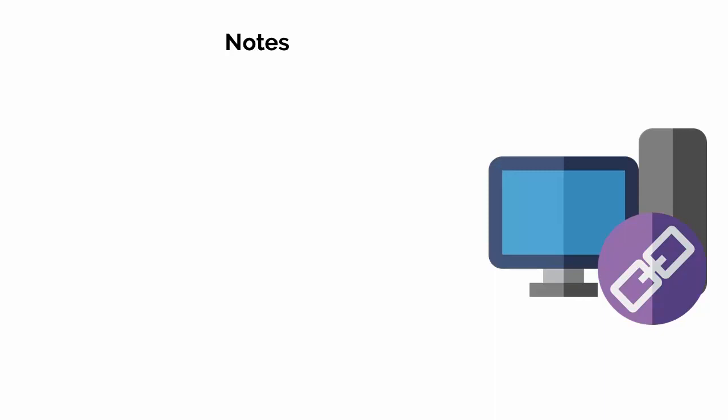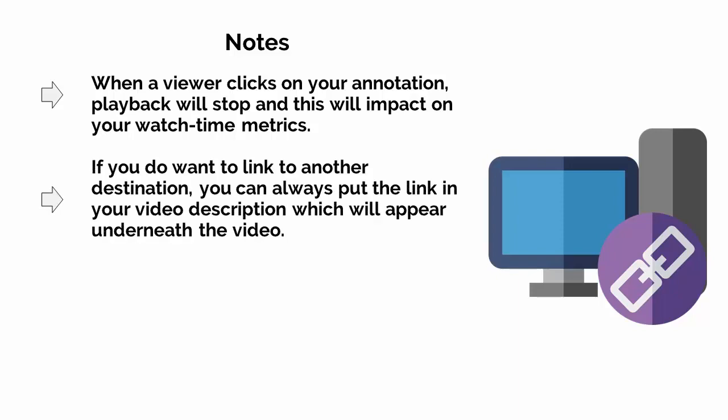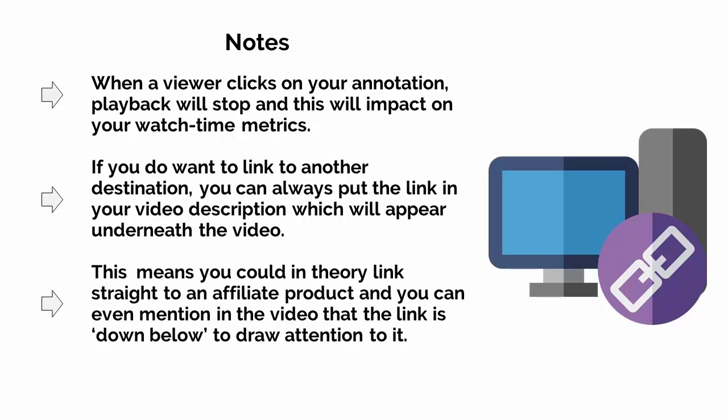A few notes: first, when a viewer clicks on your annotation, playback will stop and this will impact your watch time metrics. Second, if you do want to link to another destination, you can always put the link in your video description, which appears underneath the video. This means you could, in theory, link straight to an affiliate product, and you can even mention in the video that the link is down below to draw attention to it. There are tons of options here.